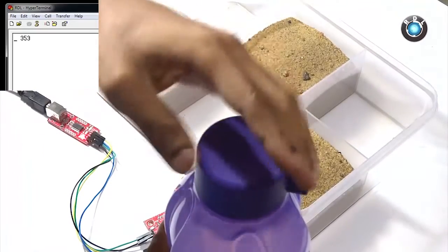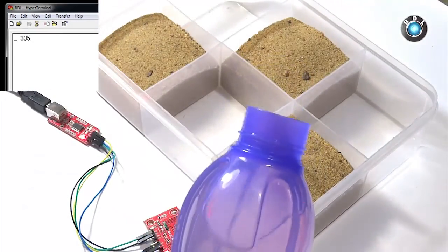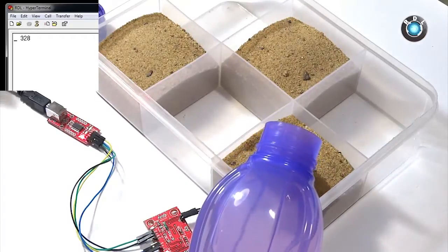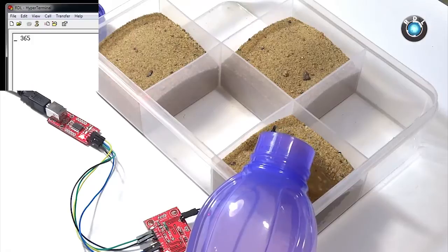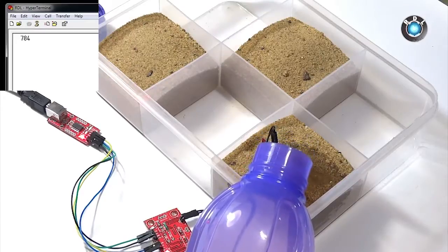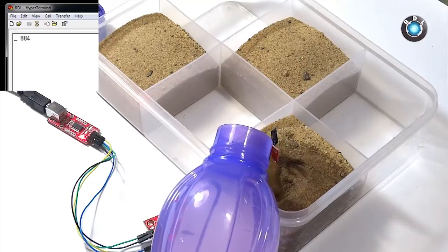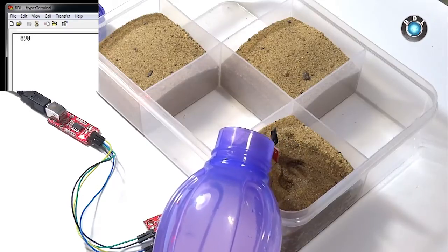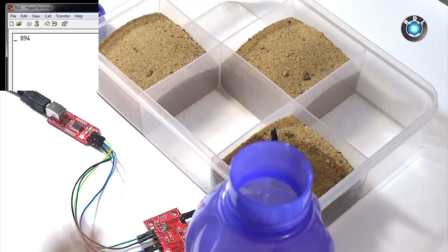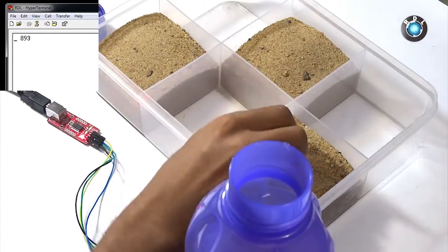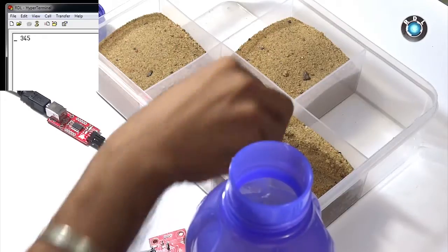I will now start pouring water into this sand. Notice the serial window as well. As soon as the moisture content in the sand increases, the readings are read and displayed on the computer here. After some time the value remains constant. Now if I remove the electrodes, the value decreases. You can see the value in the serial window there.